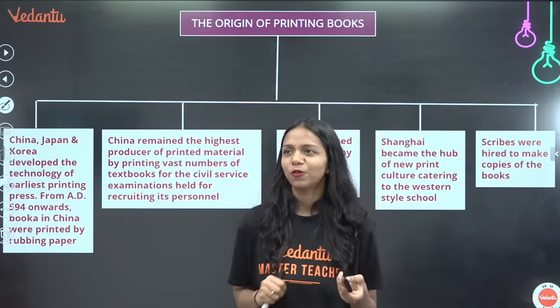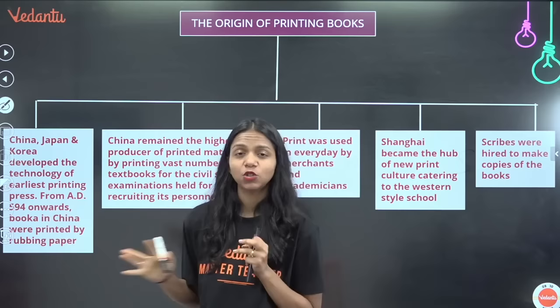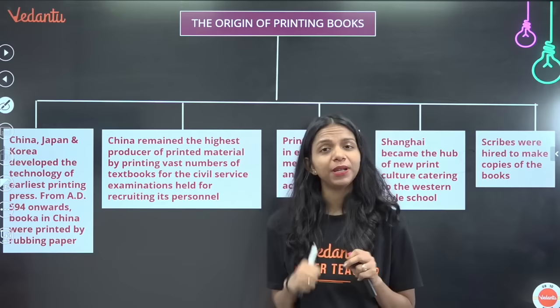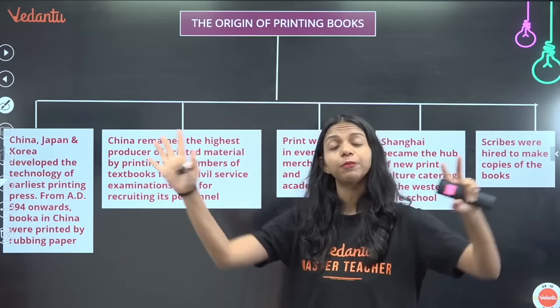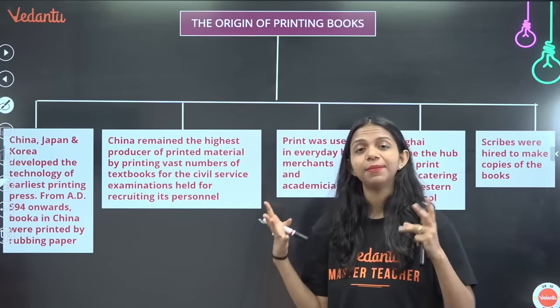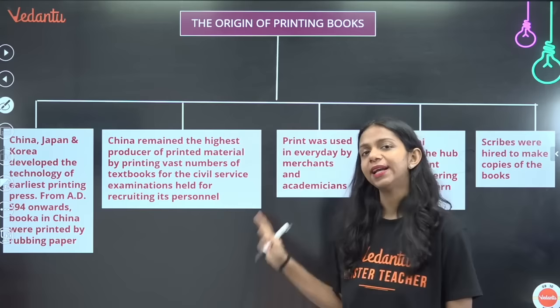The story of this chapter begins with where the concept of print first developed. In China, Japan, and Korea, this technology developed using rubbing paper — proper stamping and rubbing paper. China was one of the largest producers of printed material. The imperial government was the biggest printer, because for civil services examinations, if you wanted to enter the bureaucracy, you had to give an exam, and the imperial government printed the textbooks needed for that exam.